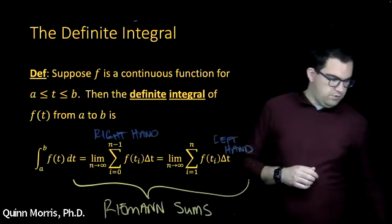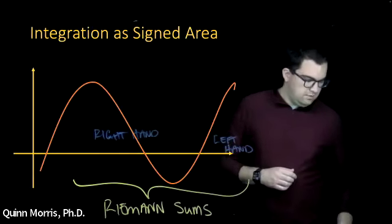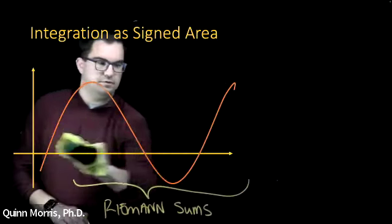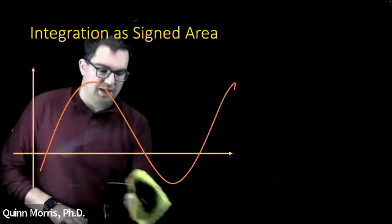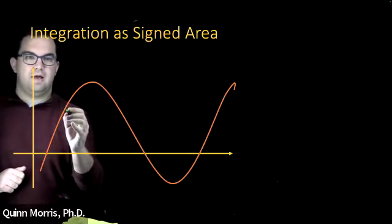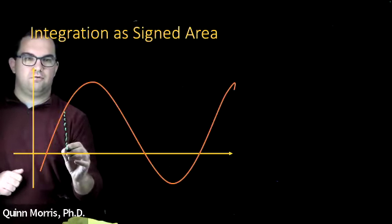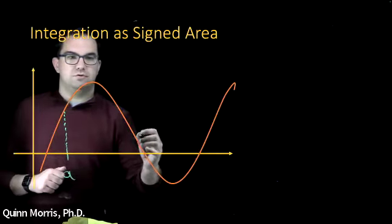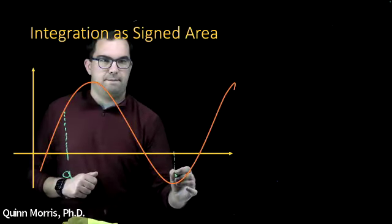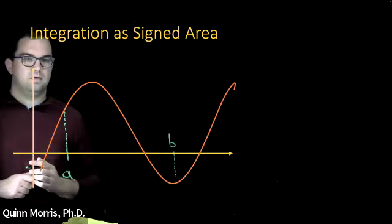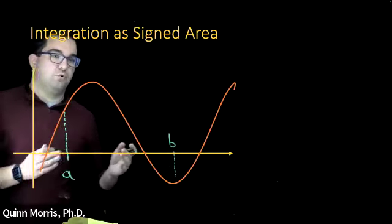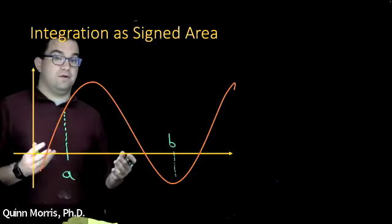So what are the ideas here? Fundamentally, I can think of the problem of finding a definite integral as finding the area under some curve. So imagine I have this function plotted here, and let's say that I wanted to find the area under the curve from some point A to some other point B.